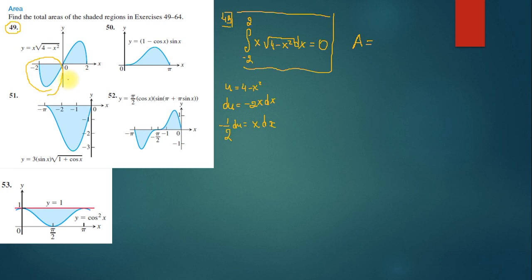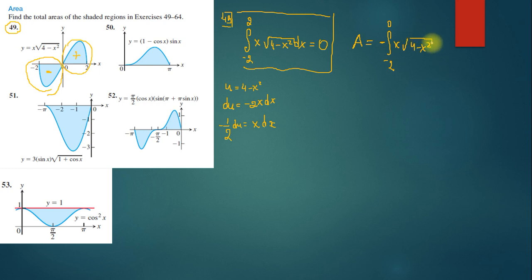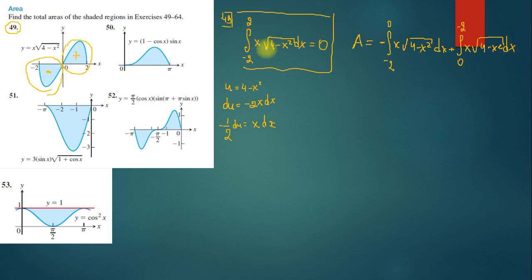To find the area, first find the area of the part below the x-axis, and secondly find the area of the part above. When you find the integral of the part below, you need to put a minus sign in front of that integral and a plus in front of the other. So we write: minus integral from -2 to 0, plus integral from 0 to 2, of x√(4 - x²) dx. As stated, the total is zero but for area we do this.